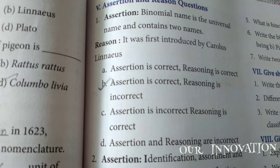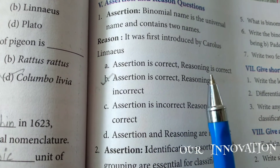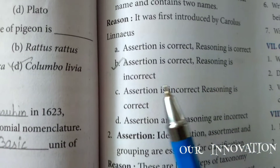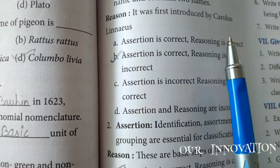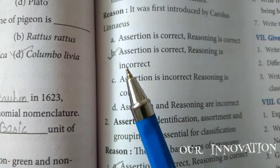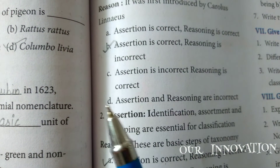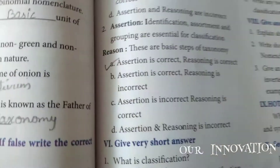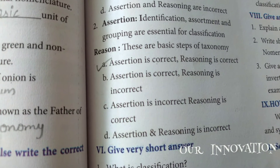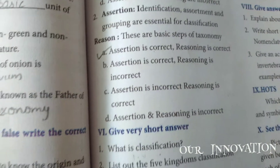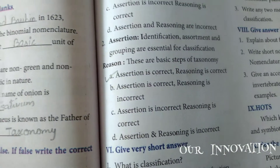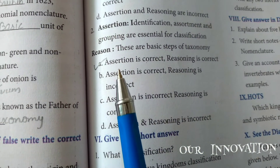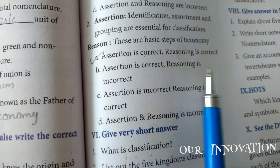Roman numeral 5: assertion and reason questions. First: assertion - binomial name is the universal name and contains two names. It was introduced by Carolus Linnaeus. Answer is B - assertion is correct but reasoning is incorrect. Second: assertion - identification, assortment, and grouping are essential for classification. Reason - these are the basic steps of taxonomy. Here both assertion and reason are correct.